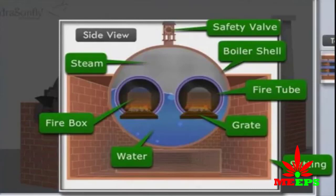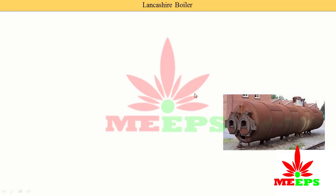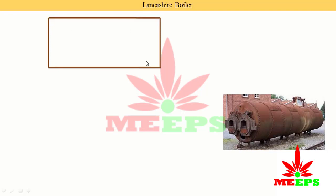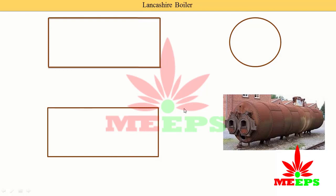Here you can see a 3D figure of the Lancashire boiler — it is one cylindrical component. From the side view it looks like a circle, from the front view it looks like a rectangle, and from the top it also looks like a rectangle. This cylindrical shell appears differently depending on the viewing angle.